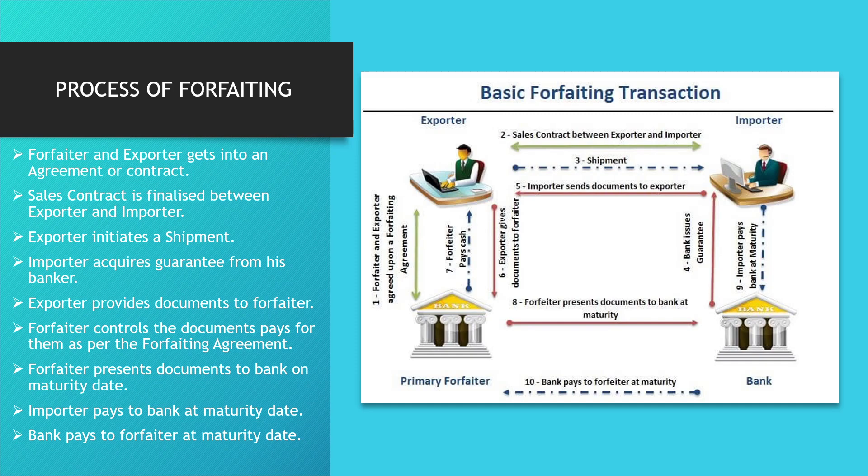The exporter gets the payment after the discount. Then the forfeiter presents the document to the bank at maturity date — point number nine. Then the importer pays to the bank at maturity date, and finally the bank pays to the forfeiter at maturity date. This completes the process of forfeiting.